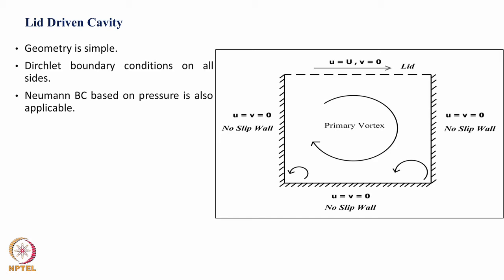You can have a Dirichlet type of boundary condition, that is specifying a particular value for the variable. In this figure, the Dirichlet boundary condition is in terms of velocity: u equal to v equal to 0 on all three sides of the wall. On the top you have a velocity driving condition: u equals a specific velocity and v equals 0. It is also possible to prescribe a Neumann type of boundary condition for pressure.